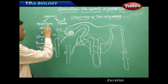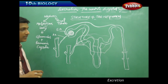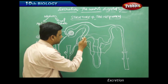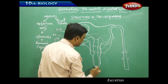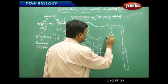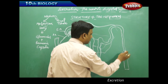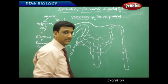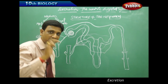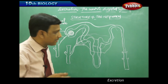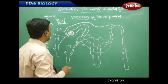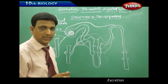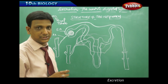These two together are called the Malpighian body. The remaining part — the complete tube which is connected to the pelvis and finally opens into the ureter — is called the renal tubule.